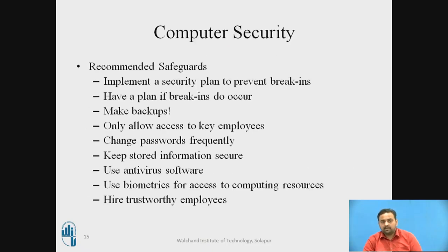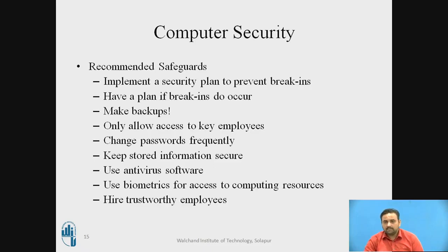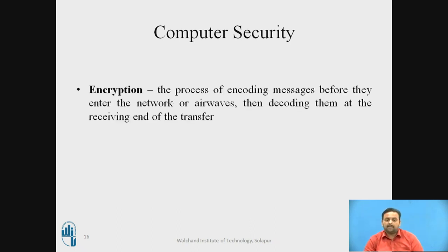The third term is computer security, and we have various safeguards. You have to be ready with a security plan, knowing that break-ins can occur. Measures include backup and restoring, only allowing access to key employees, changing passwords frequently, using antivirus software, using biometrics to access computer resources, and hiring trustworthy employees. Encryption is the process of encoding messages before they enter the network and decoding them at the receiving end, so no one can steal that data.